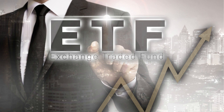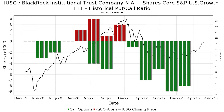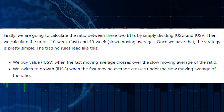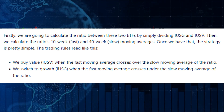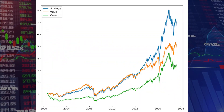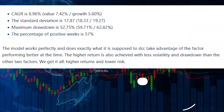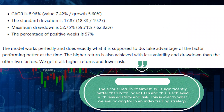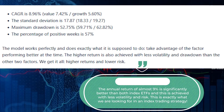Let's look at two index ETFs that track value and growth: IUSV, which tracks value stocks, and IUSG, which tracks growth stocks. We made a weekly strategy with the rules shown on the screen. It's a moving average crossover system, and it has performed well since 2001. Our rotation system has beaten both indexes nicely. The annual return of almost 9% is significantly better than both index ETFs, and this is achieved with less volatility and risk.